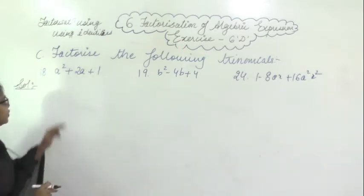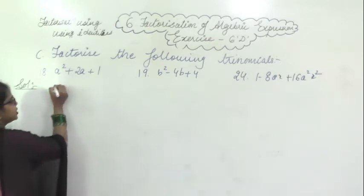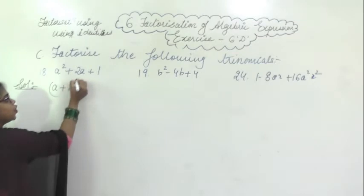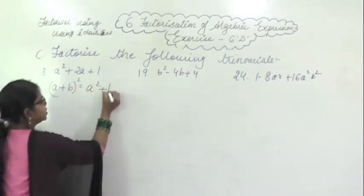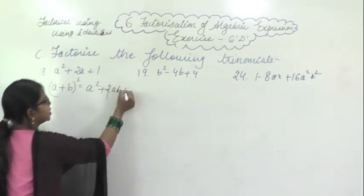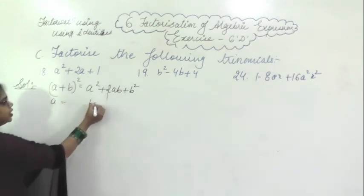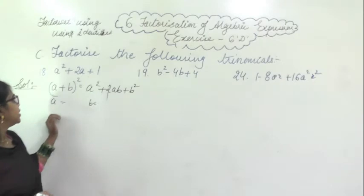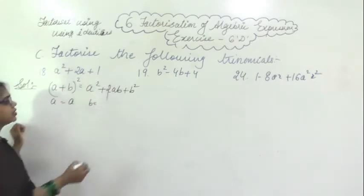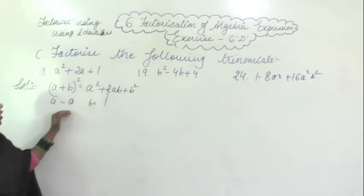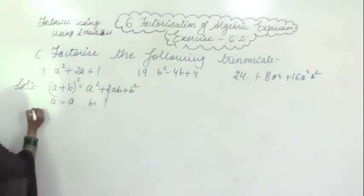You are given a² + 2a + 1. Both signs are plus, so which identity? The (a+b)² identity. You will get a² + 2ab + b². The numbers should be perfect squares — a² gives a, and 1×1 gives 1, which is a perfect square.